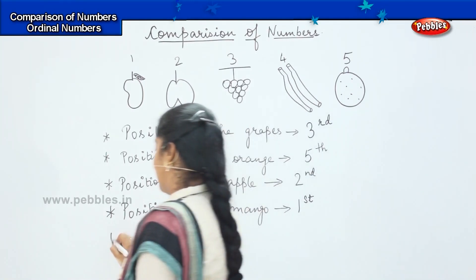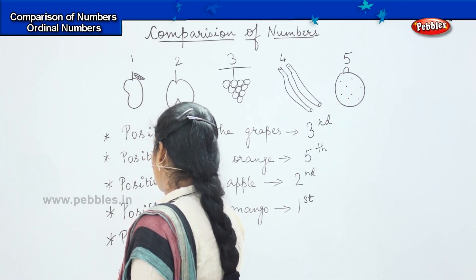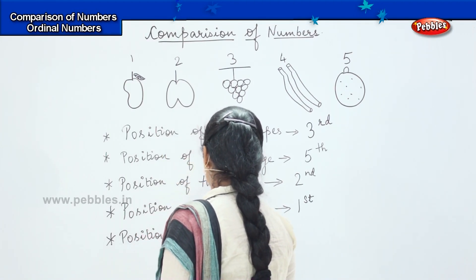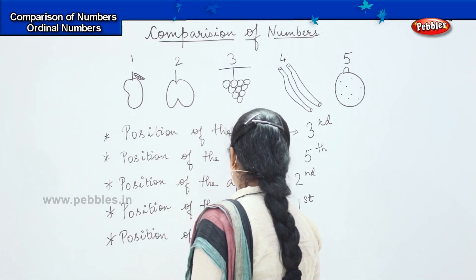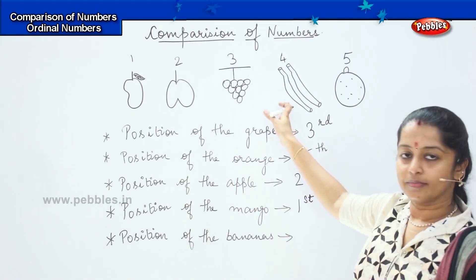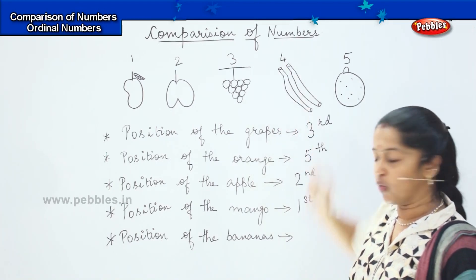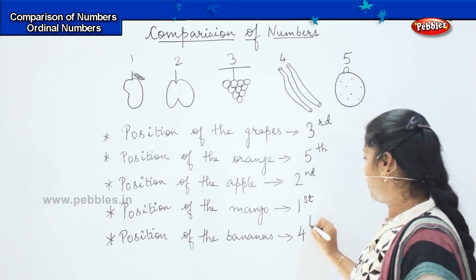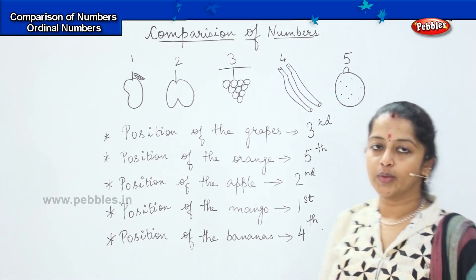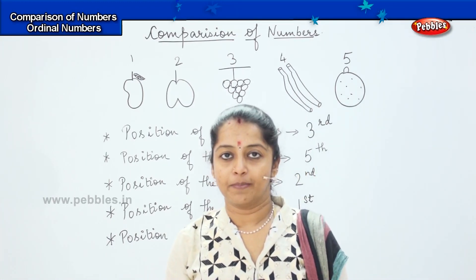The last one — tell me the position of the bananas. Where can you find the bananas in the picture? The number given here is four, so you will write 4th — four and 'th.' Children, are you clear with this? Are you clear with the concept of the position of objects?